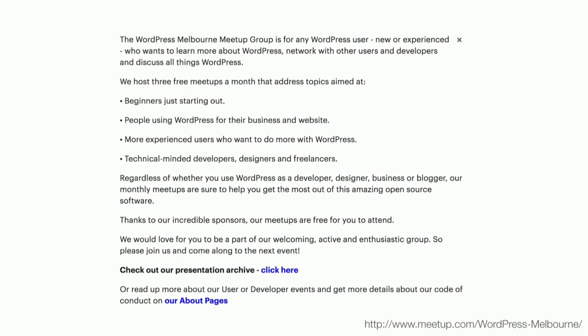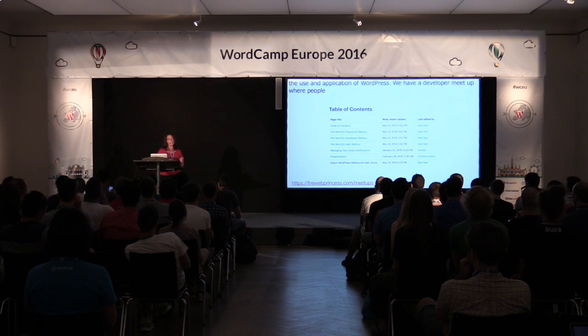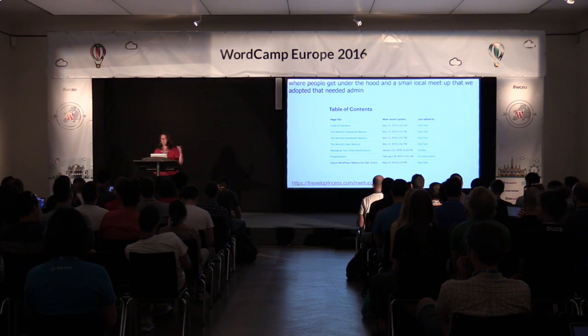This is our about page. It gives broad strokes about the group and gives people the opportunity to look a bit further if they wish. We've made maximum use of the custom pages available on meetup.com. We run three meetups a month: a user meetup which focuses less on code and more on the use and application of WordPress, a developer meetup where people get under the hood, and a small local meetup that we adopted. In our meetup pages we outline the details about each of those groups and we have our code of conduct so people know what's expected.